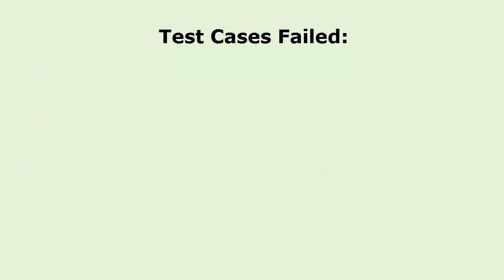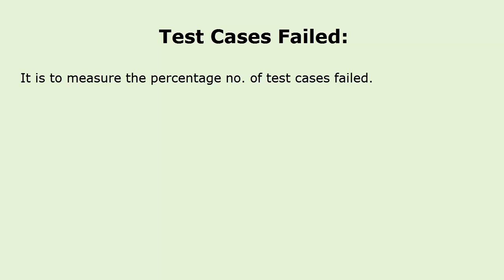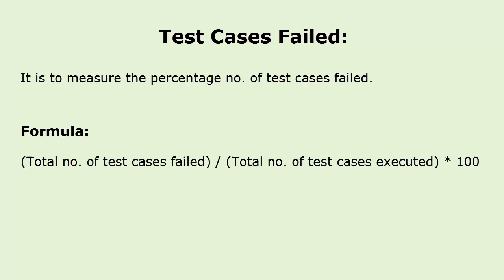Test cases failed: it is used to measure the percentage number of test cases failed. The formula for test cases failed metric is: test cases failed = (total number of test cases failed divided by total number of test cases executed) multiplied by 100. Here goes an example on test cases failed matrix.